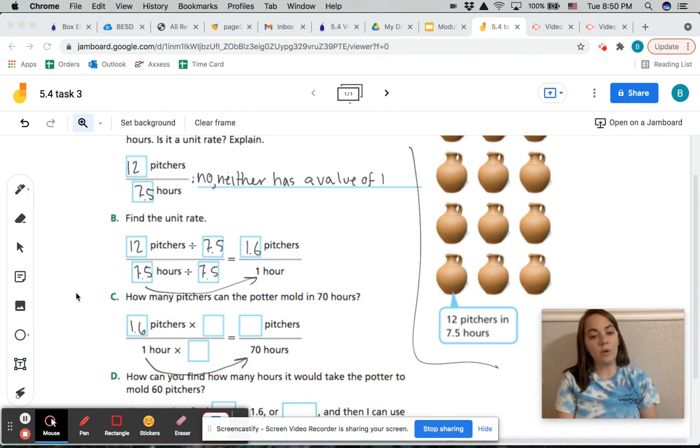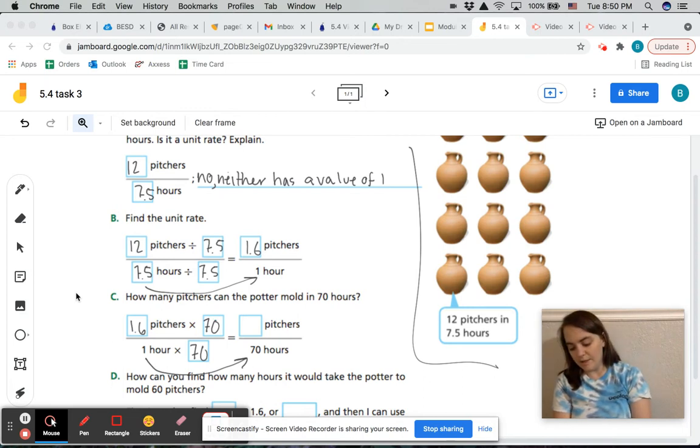So what do we have to multiply 1 by to get 70? 70. 1 times 70 equals 70, okay? And what we do to the bottom, we're going to do to the top 70. So now we're left with 1.6 times 70, which is 112. So now we know in 70 hours, the potter can mold 112 pitchers. That's a lot of pitchers, okay?